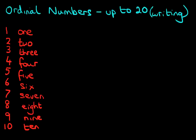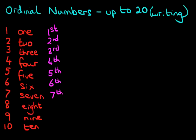So we've got 1, 2, 3, 4, 5, 6, 7, 8, 9, and 10. Now what we're going to do is write down the ordinal numbers right next to this. So we've got 1, 2, 3, 4, 5, 6, 7, 8, 9, and 10.